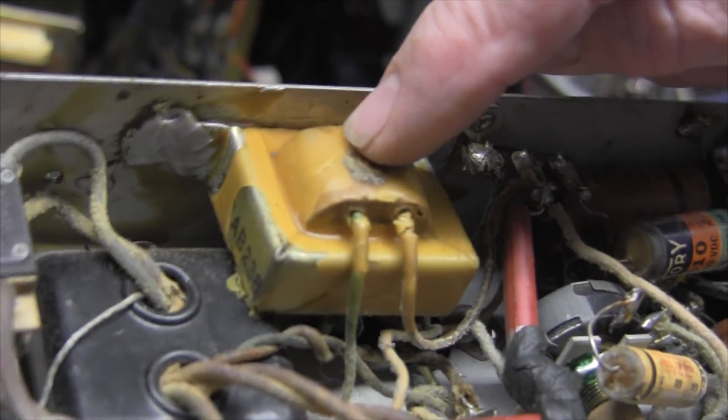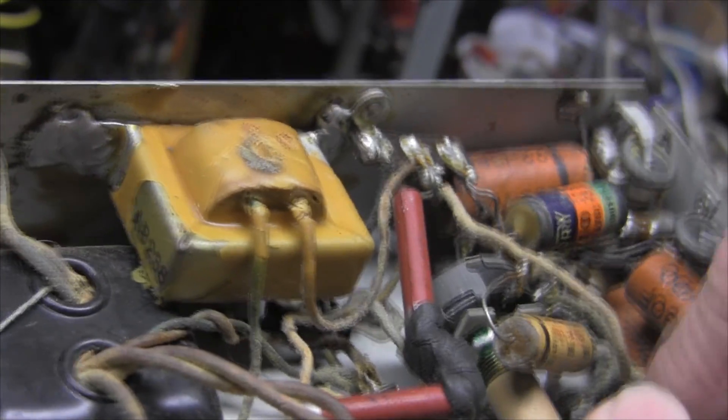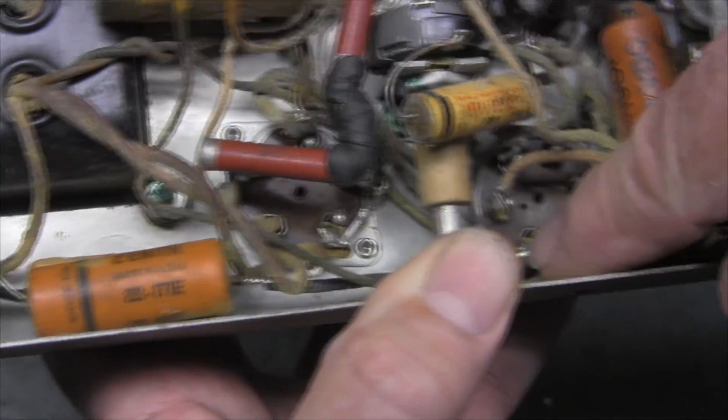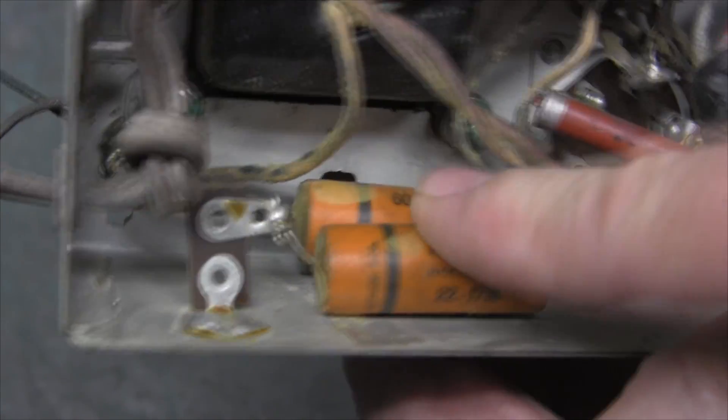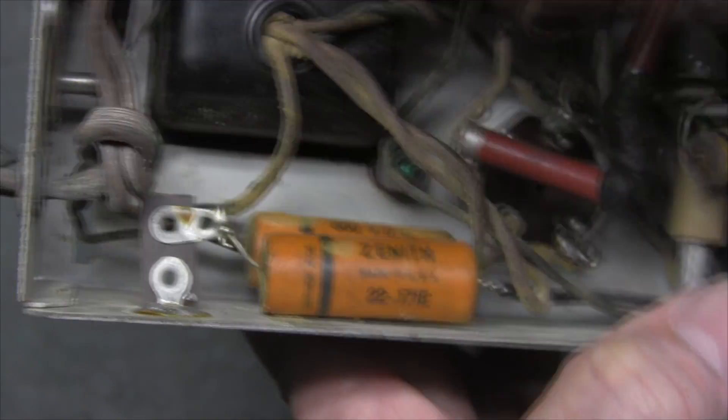This should be an 8 ohm output transformer. It goes to the plate of the 41, goes to B+, but there's no secondary on it. It's just a choke. Coming off the plate right there is a pair of 0.22 microfarad 600 volt capacitors. And they go to that connector, that headphone connector, one pin grounded, one pin to a cap, and the other capacitor goes to one of these wires and to ground.